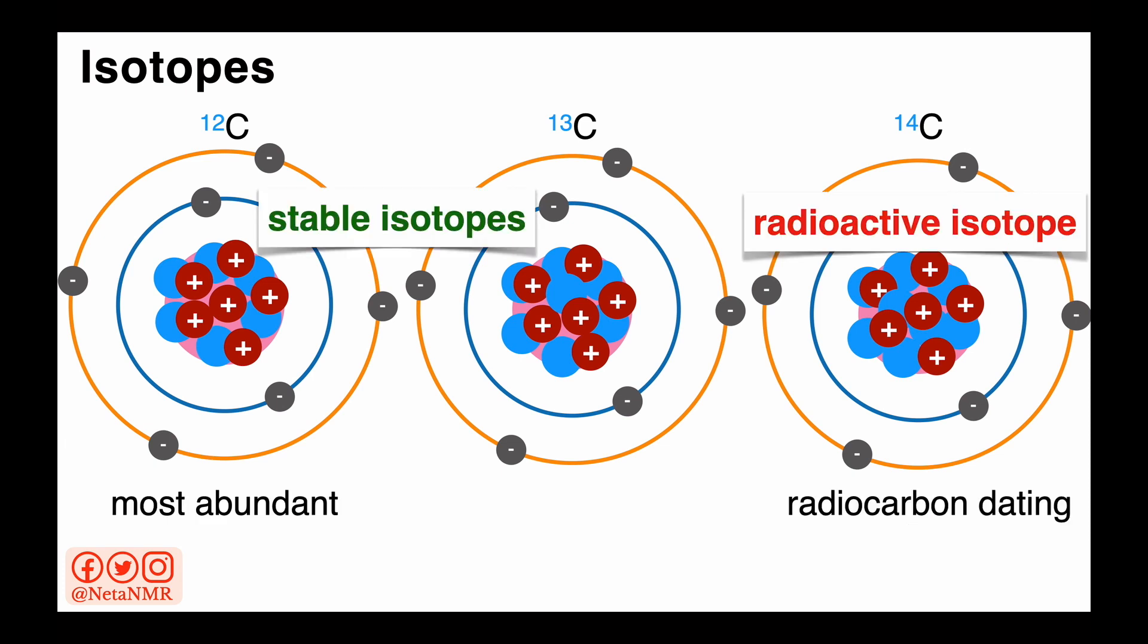Carbon 12 and carbon 13 are stable isotopes, with carbon 12 being the most abundant carbon isotope. Carbon 14 is one of the radioactive isotopes of carbon.